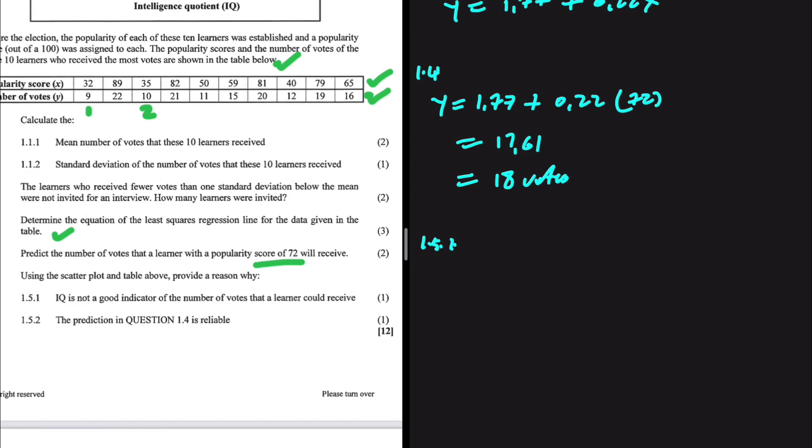Why is the prediction in 1.4 reliable? Well, in 1.4, we are using the popularity score to determine the number of votes that a person is going to get. That is because we have a very high correlation. Well, you can use Shift 1 and go to 5 for regression and press the option that gives you the correlation coefficient. In this case, it is going to be 0.98. Every high correlation will lead to a reliable prediction.